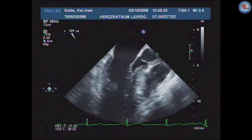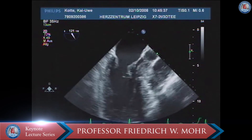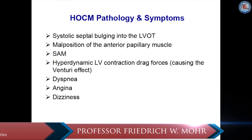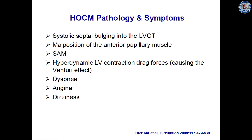The pathology and the symptoms of hypertrophic obstructive cardiomyopathy are well described, and if you look at the paper of Dr. Pfeiffer in Circulation in 2008, it describes well the septal bulging of the mitral valve into the LVOT, a malaligned position of the anterior papillary muscle, and the drag forces of the left ventricle on the mitral valve causing a ventricular effect at the subvalvular level. The patient presents with dyspnea, angina, dizziness, and sometimes Adams-Stokes situations.